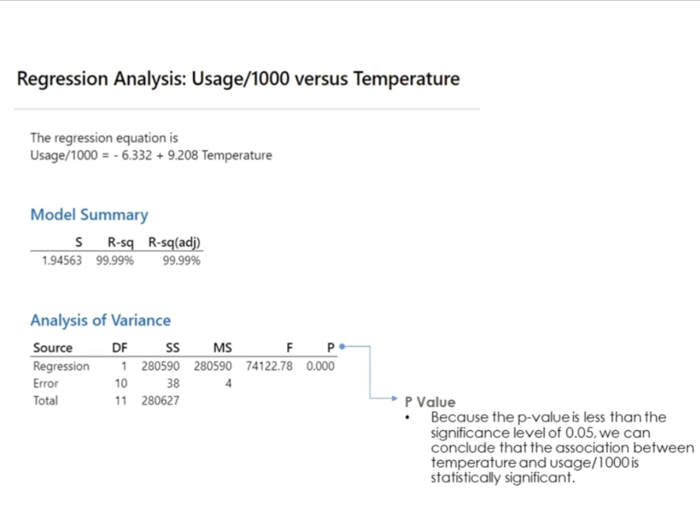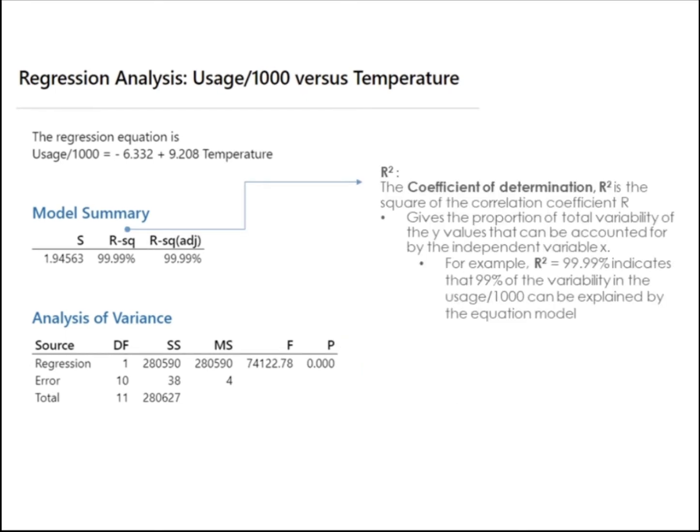P-Value: because the P-Value is less than the significance level of 0.05, we can conclude that the association between temperature and usage per 1000 is statistically significant. The coefficient of determination, R-squared, is the square of the correlation coefficient R. It gives the proportion of total variability of the Y values that can be accounted for by the independent variable X. For example, R-squared of 99.99% indicates that 99% of the variability in the usage per 1000 can be explained by the equation model.